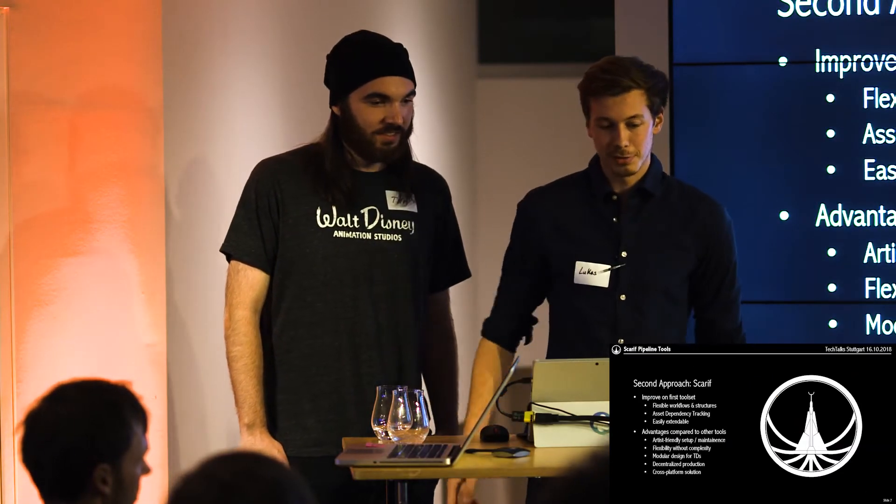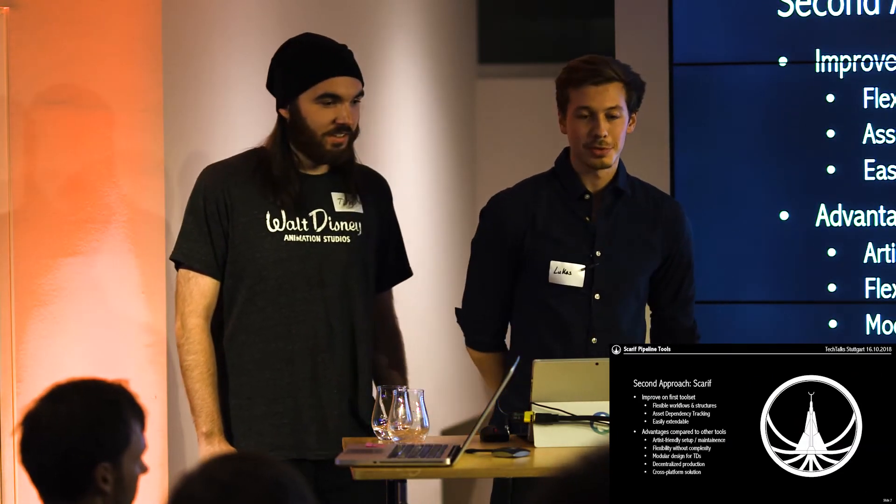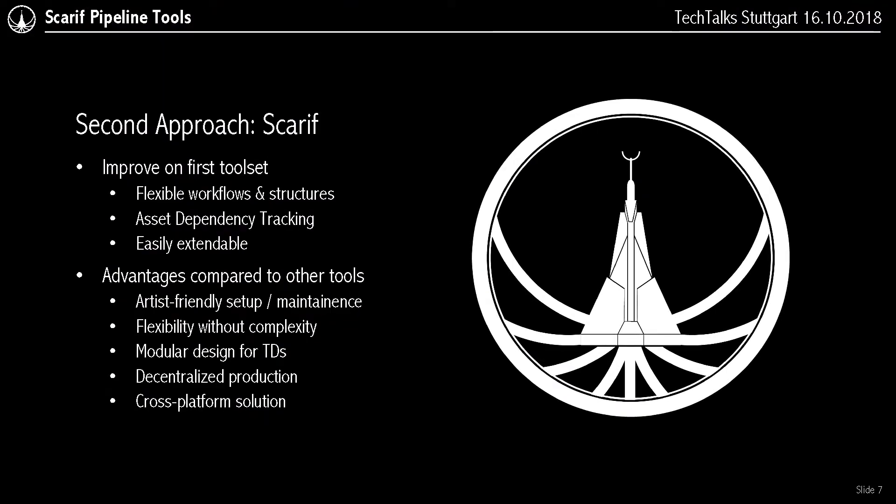We fixed most of that, if not all of it. Our second approach was Scarif, and we improved on lots of features. We tried to focus on making it very flexible for workflows and also the structure, so the user can define workflows the project demands. We focused on asset dependency tracking, so if a render goes out we can track — without opening any software — exactly which assets, caches, versions, and textures were used.